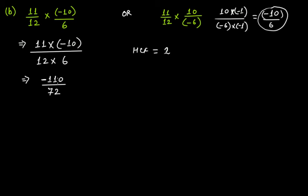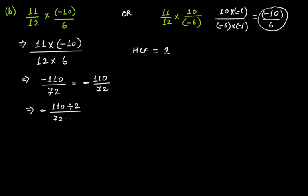Keep the minus sign here — you can write this as a minus sign in the middle. If you divide 110 by 2 and 72 by 2 you get minus 55 over 36. So this is the answer.